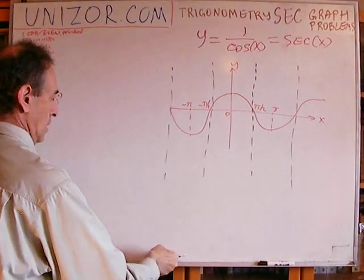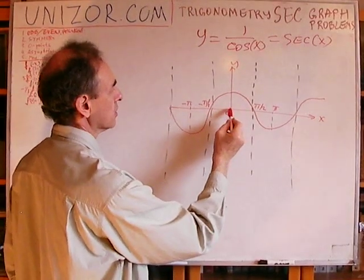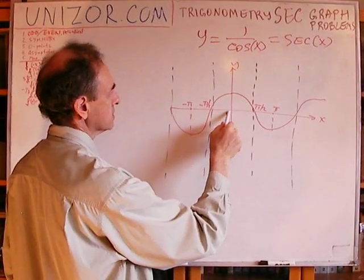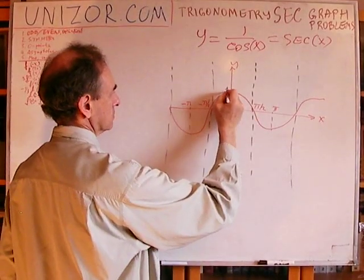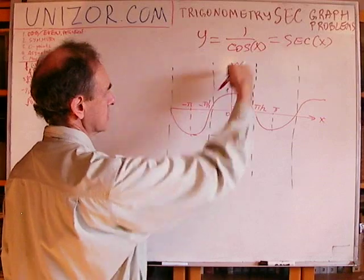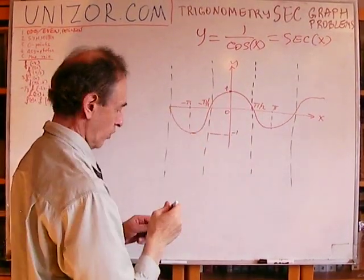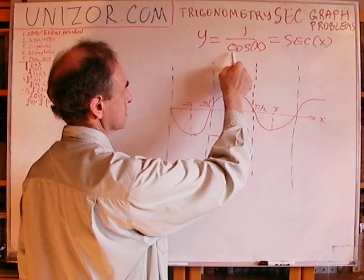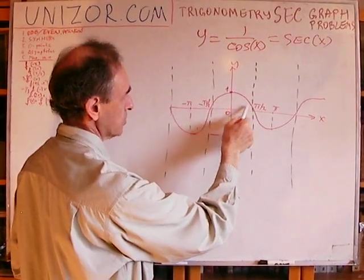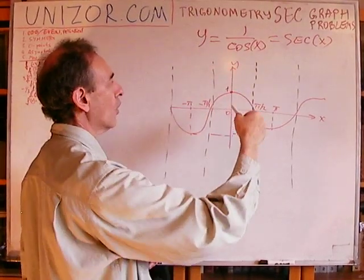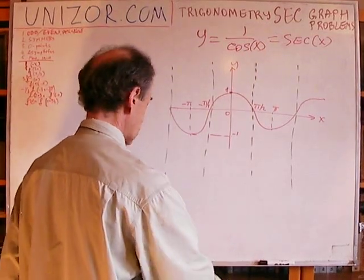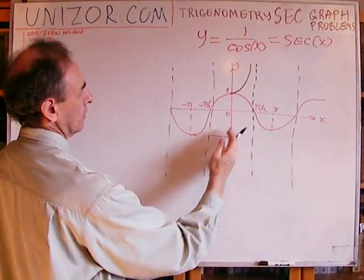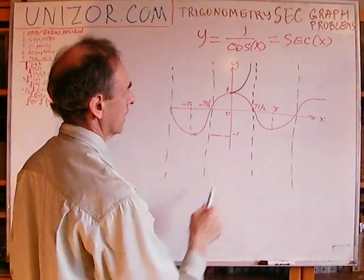Now let's consider how it looks. From 0, moving toward increasing x: at x=0, cosine equals 1, and obviously its inverse is 1 as well — so this is the starting point. Secant will grow because cosine goes down to 0 being positive, and since it's in the denominator, 1 over cosine goes to plus infinity. It goes asymptotically close to the vertical line through π/2.